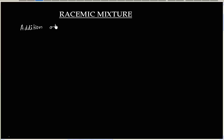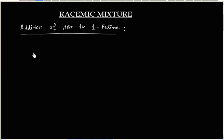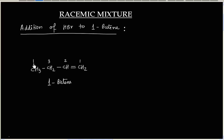We have addition of HBr to 1-butene. This molecule is 1-butene. If HBr is added over this molecule, it follows Markovnikov addition: hydrogen is added to carbon number 1 and bromine is added to carbon number 2.